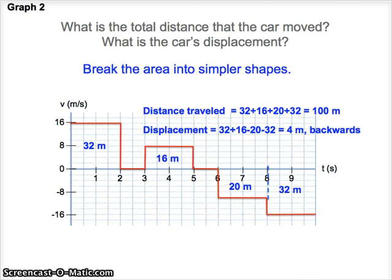So the distance traveled is 100 meters, just adding all the values. The displacement, we consider the first 32 meters and the 16 meters to be in the forward direction. And then we subtract 20, subtract 32, and we see that we actually end up 4 meters behind the starting point. The answer comes out to be negative 4.